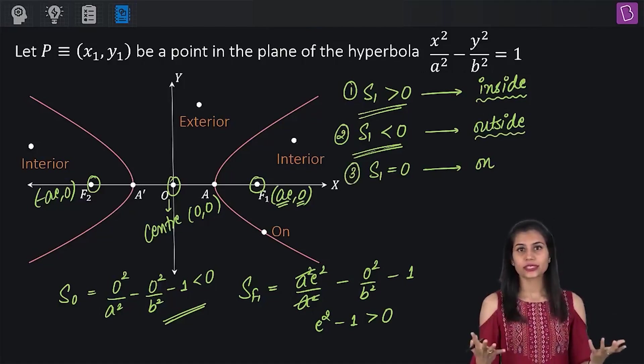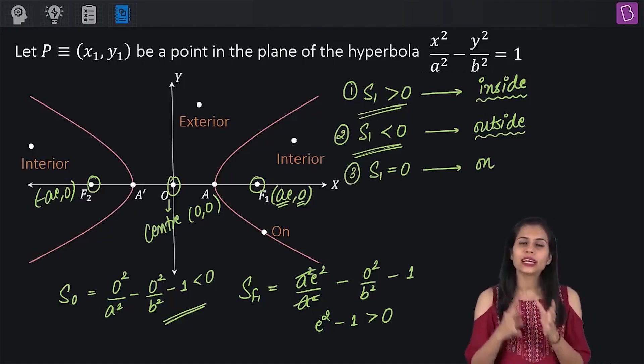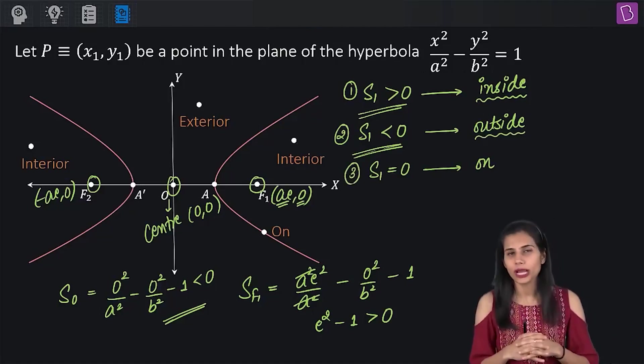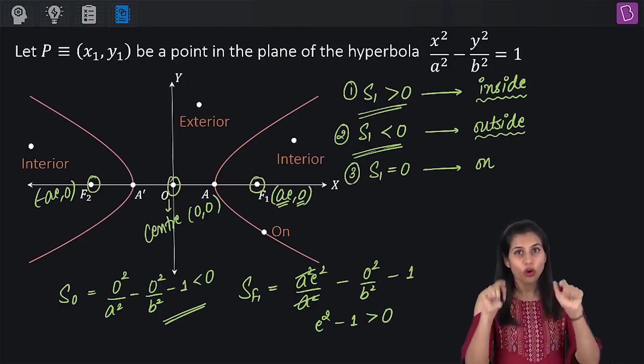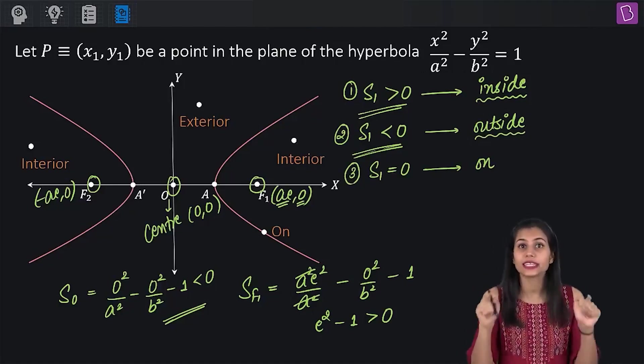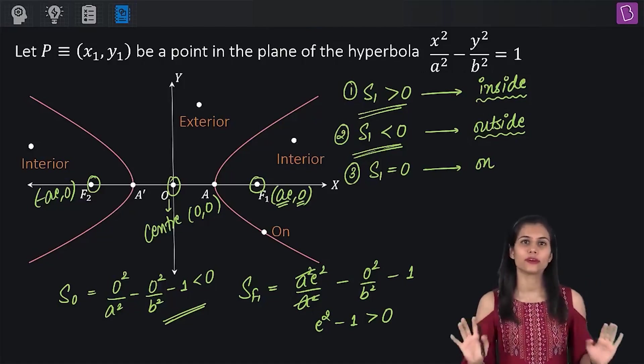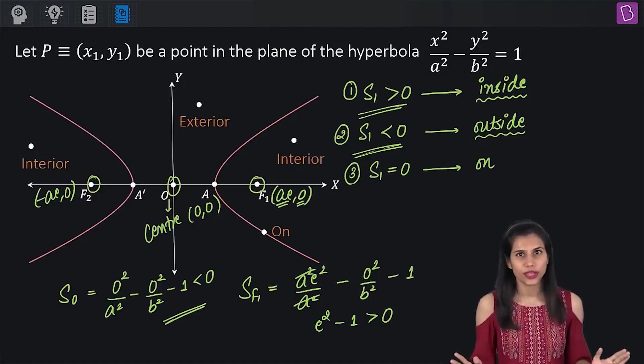And lastly, needless to say, S1 equal to 0 will continue to imply the region on the hyperbola because if a point is sitting on the hyperbola, it will satisfy its equation and hence, for that point, S1 will come out to be equal to 0, no doubt about that.